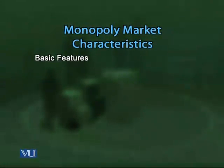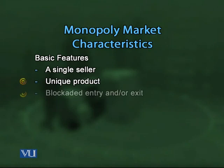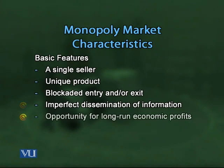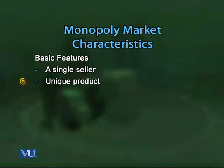Some basic features common to all monopolies are: number one, single seller; number two, unique product; number three, blocked entry and/or exit into the market; number four, imperfect dissemination of information; and number five, opportunity for long-run economic profits. Since there is a single seller, the firm is the industry — firm and market are identical in this case.